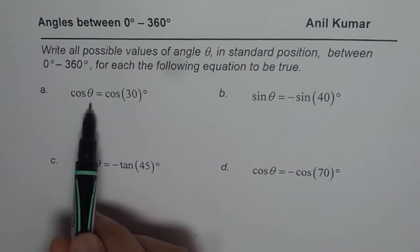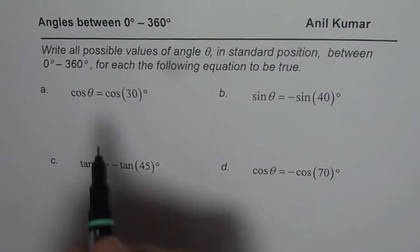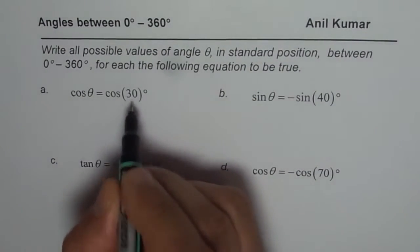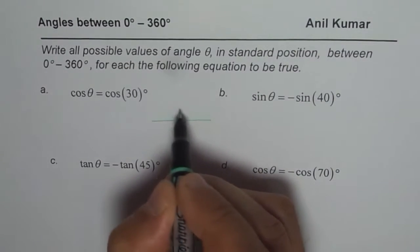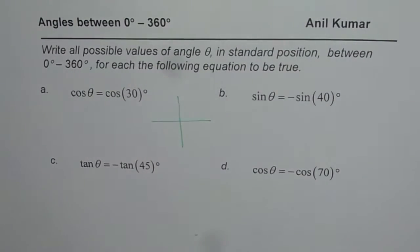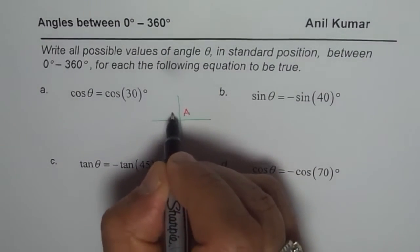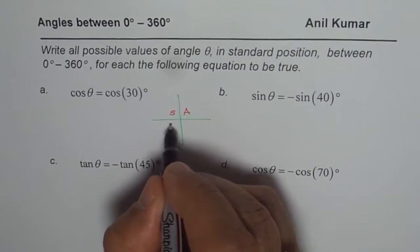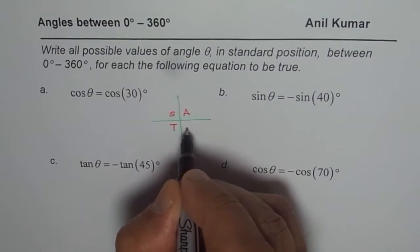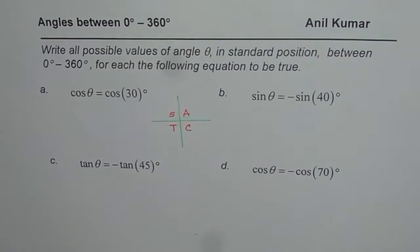So first equation is cos theta equals to cos of 30 degrees. Now, when we are talking about cosine, then let's look into the Cartesian plane. You know, all are positive in quadrant 1, sine is positive in quadrant 2, tan is positive in quadrant 3, and cosine is positive in quadrant 4.